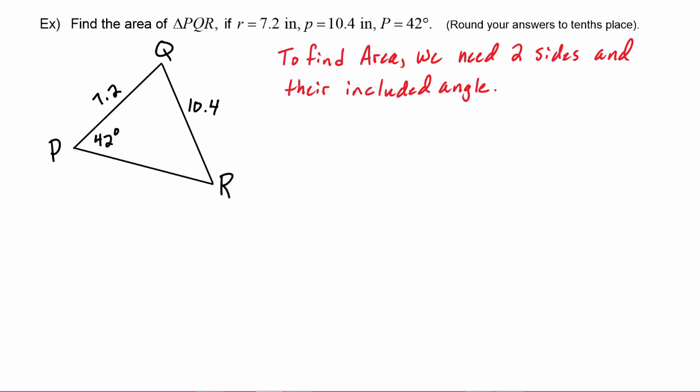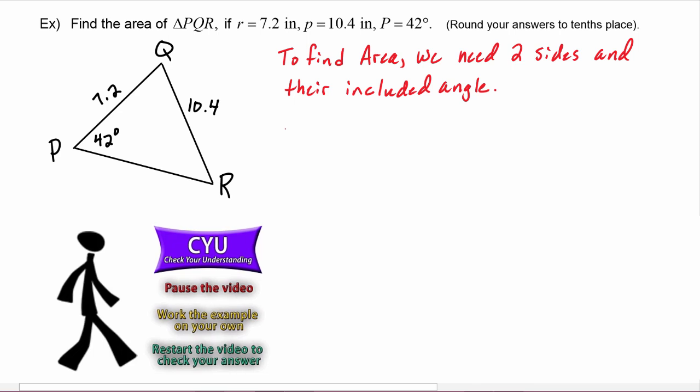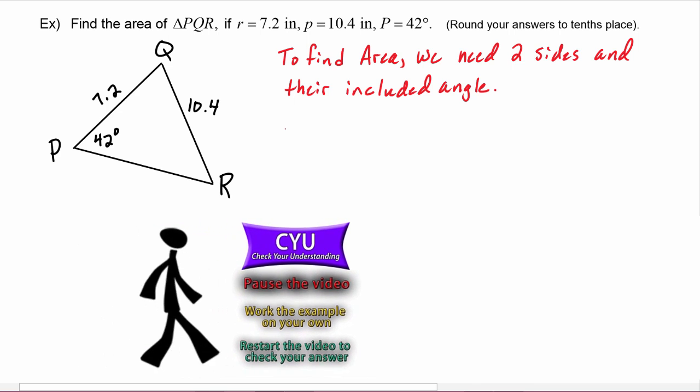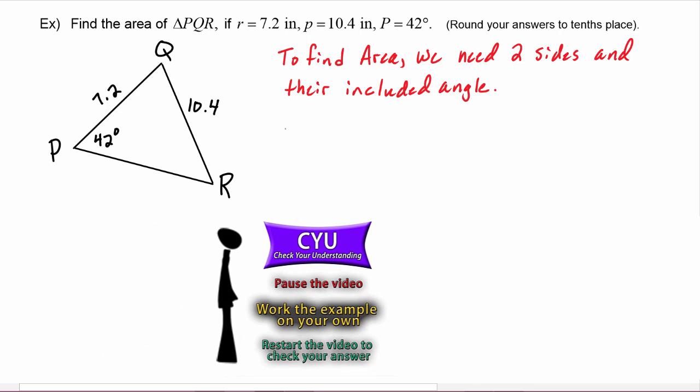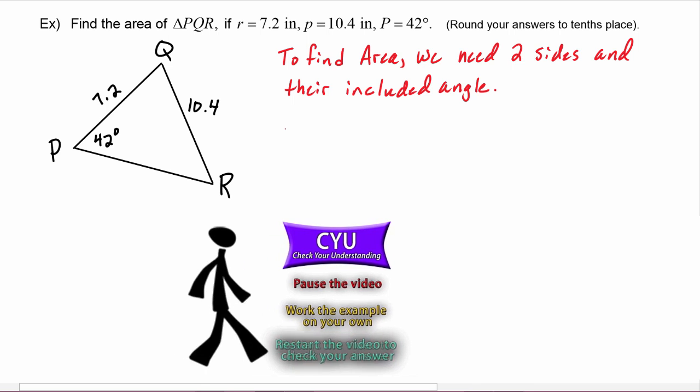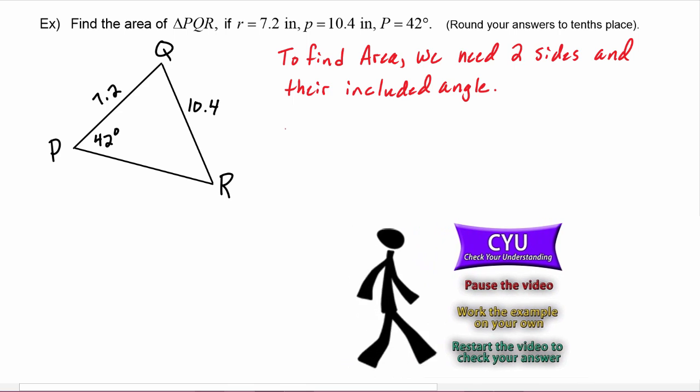Now the first thing that we can find is angle R, because we know its opposite side, we will be able to use Law of Sines to find angle R. So let's set that up. It's CYU time, so pause the video, work the example on your own, then restart the video to check your answer. Okay, let's see how you did.